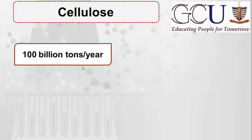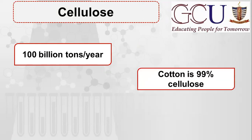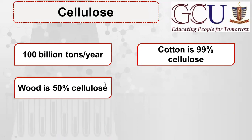Plants produce cellulose every year — each year plants produce 100 billion tons of cellulose. Cotton is 99% cellulose, and wood is about 50% cellulose.